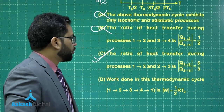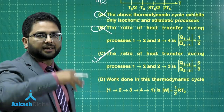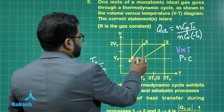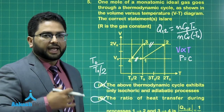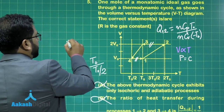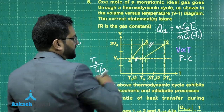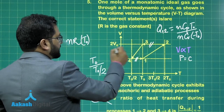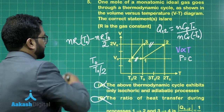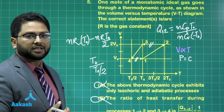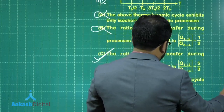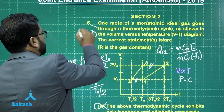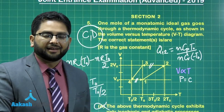Now we need to calculate the net work done in this thermodynamic cycle. The work done in the isochoric processes is zero. The work done in process 1→2 is NR·ΔT = NR·T₀. The work done in process 3→4 is NR·ΔT = −NR·T₀/2. So the total work done is NR·T₀/2. With the number of moles being 1, the answer RT₀/2 is correct — option D. So the correct options for question five are C and D.